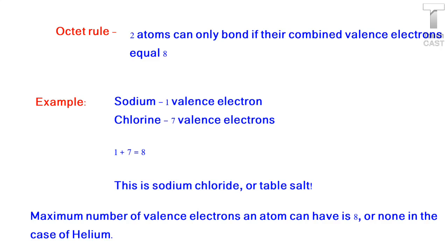Now, keep in mind, the maximum number of valence electrons an atom can have is 8. Only 8. Or none at all in the case of helium because helium has 2 electrons. Therefore, its first energy level is filled.